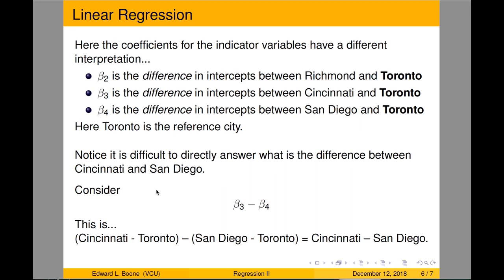It's more difficult to get the difference between two non-reference cities, like Cincinnati and San Diego. But you can use a simple trick: beta three represents the difference between Cincinnati and Toronto, and beta four represents the difference between San Diego and Toronto. If you subtract those two, Toronto cancels out and you get the difference between Cincinnati and San Diego. So this model does allow us to get that information, it just may not give it to you directly — you may have to subtract coefficients.